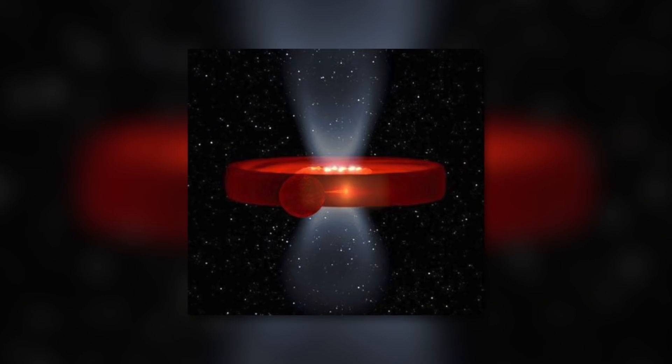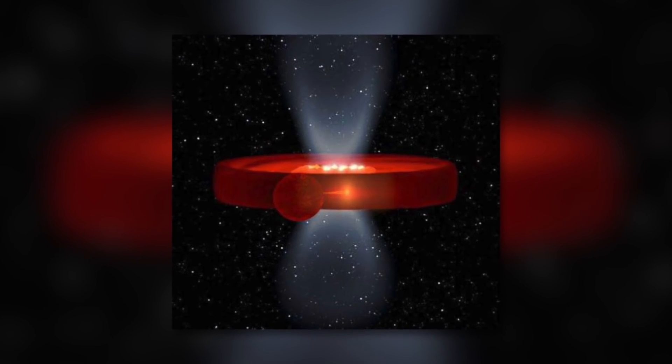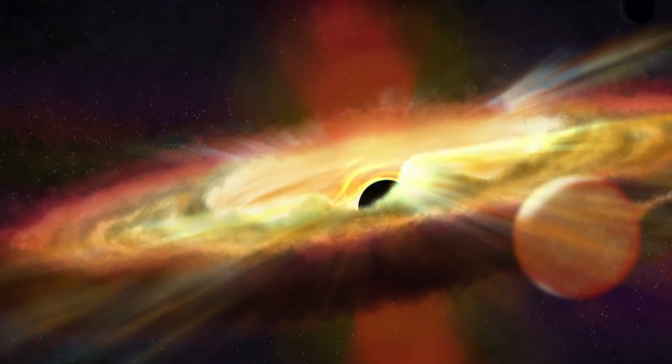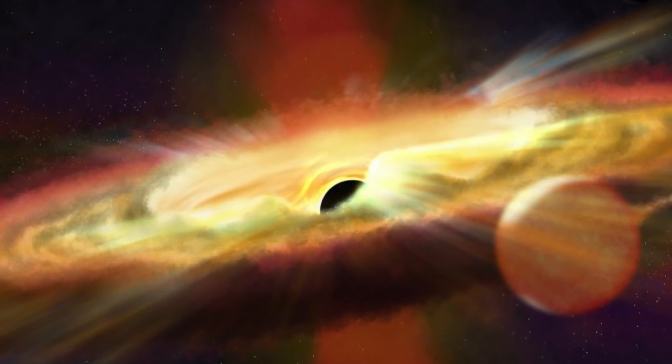What is certain is that the star in question completely circles the center of its orbit in less than three hours. Thus, the celestial body has the shortest known orbital period of all space objects discovered so far.